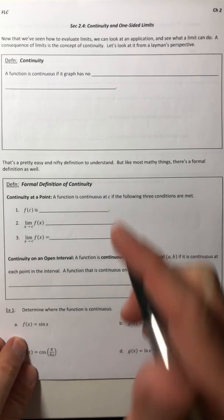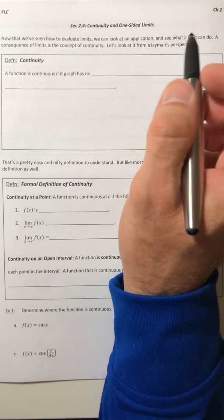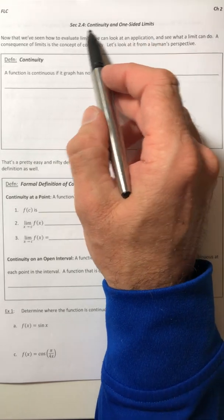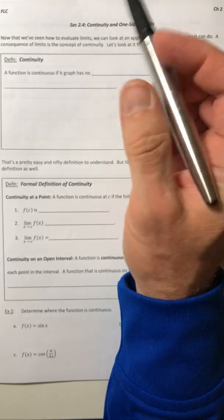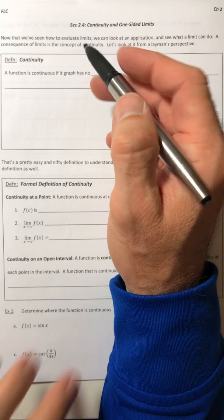And we're back. So here we go with section 2.4, continuity and one-sided limits. Let's hit continuity first. We're going to define it in two ways. I'll give you a layman's term and then we'll look at the formal definition.